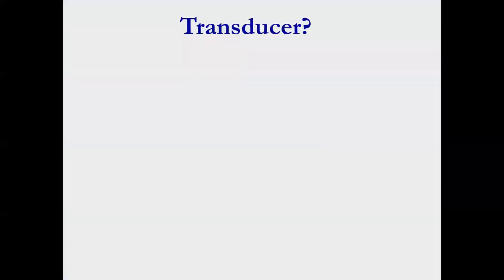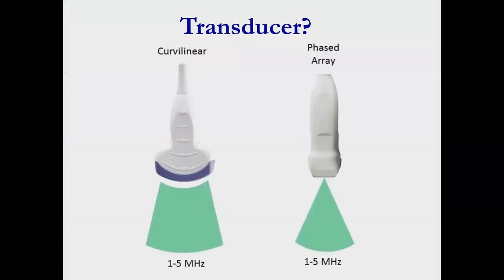Which transducer? You want something low frequency. You can use a curvilinear or a phased array. There are also some manufacturers that make a small footprint curvilinear — it's still a curvilinear, but with a much smaller footprint. The advantage of that type of transducer and the phased array is that they get in between the rib spaces really nicely.